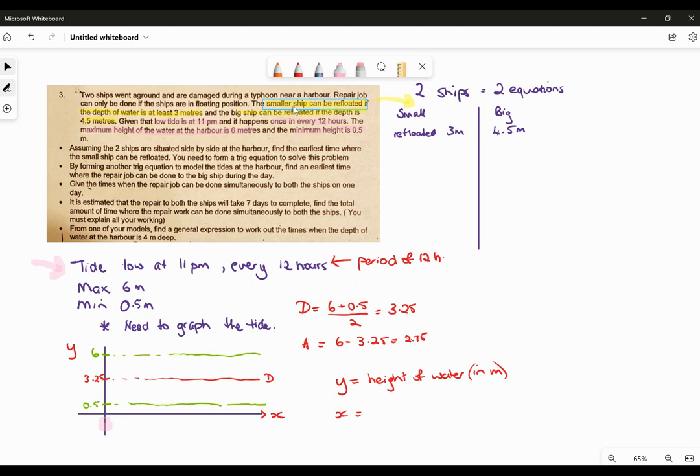The smaller ship can be floated at three metres, so I've written that over here, three metres. And the big ship can be floated at 4.5. I've written down two equations. I don't think that really makes sense, but we actually could end up two equations, but we'll get rid of that, so it's definitely not two equations. We have two ships.